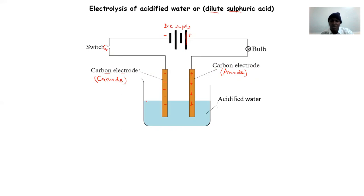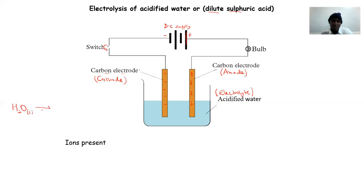The one connected to the negative terminal will become our cathode. We need to know the ions present in our electrolyte. This acidified water solution is our electrolyte through which we are going to pass electricity. Water can slightly dissociate into hydrogen ions together with hydroxide ions.